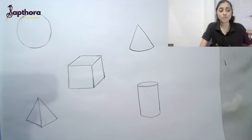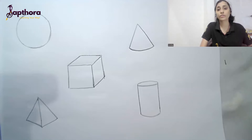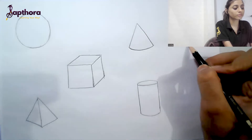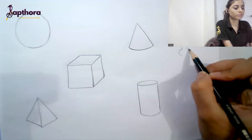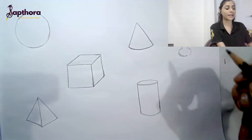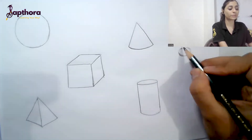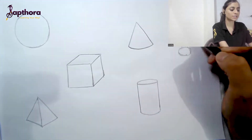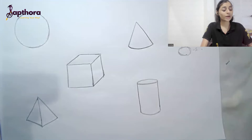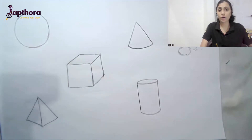For example, if you take any object, you'll always see that it is formed by combining two or three forms together. Take a simple water bottle — there's a square on the top and bottom, and a cylinder in the middle. Just like this, every shape you draw has some form in it. Once you learn how to shade these five forms, you can easily shade any object.